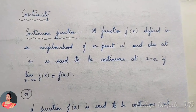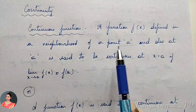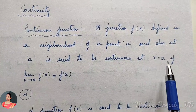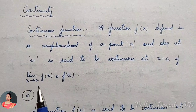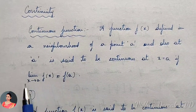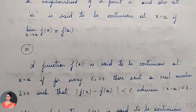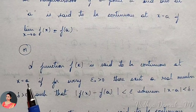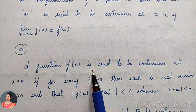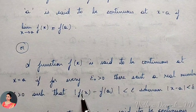We are done with limits, so now we'll start with continuity. A function f(x) defined in a neighborhood of a point a and also at a is said to be continuous at x = a if the limit as x tends to a of f(x) is equal to f(a). This is the condition for continuity of a function. This definition can also be written as: for every epsilon greater than 0, there exists a real number delta greater than 0 such that...